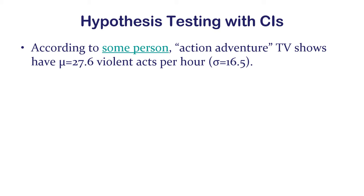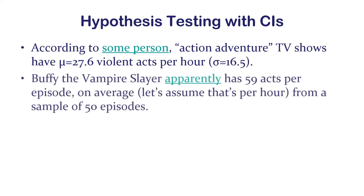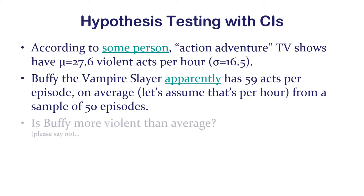Buffy the Vampire Slayer had 59 acts per episode on average — let's assume that's per hour, like a one-hour episode — from a sample of 50 episodes. So is Buffy more violent than average? Let's follow this logic through.